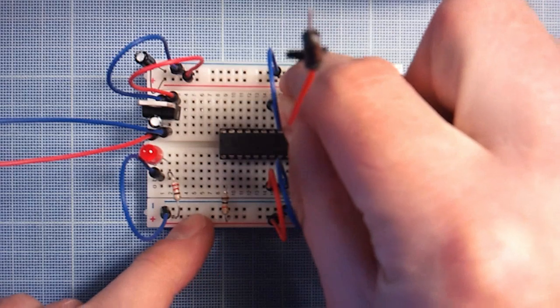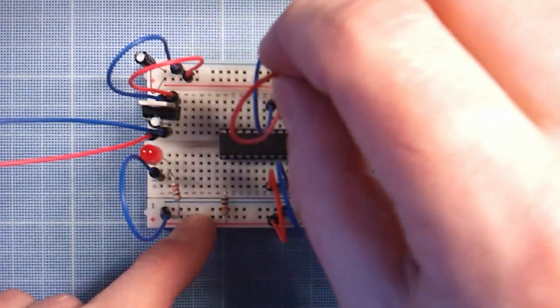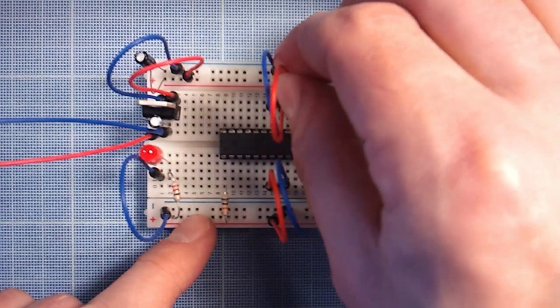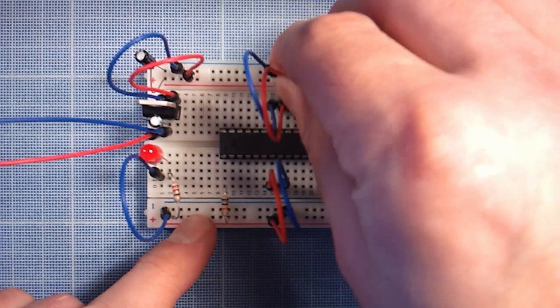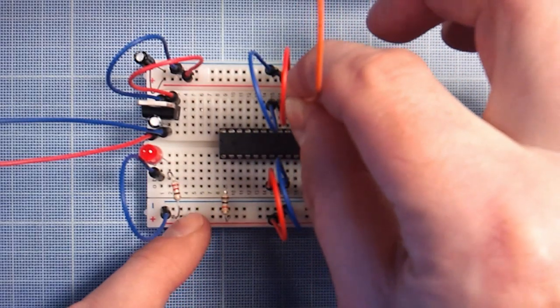Connect another jumper wire between pin 22 and ground, and pin 21 and positive rail. Next one goes between pin 20 and positive rail.